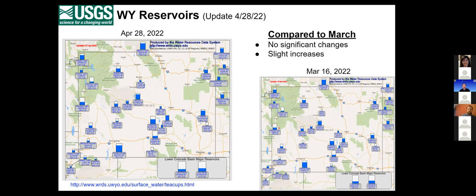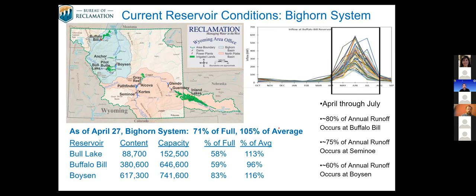Thank you, Aaron. Next up, we have Nicole Nielsen with the Bureau of Reclamation to talk about reservoir operations. Good afternoon. I'm going to share a little bit about our current reservoir conditions within the Bighorn Basin and the North Platte Basin, coming off a dry year and these drought-like conditions this year, which are affecting how we are storing and delivering our water. The Bighorn system sends water to irrigate approximately 200,000 acres of farmland, so we try to be very mindful of our water conditions and operations for our irrigation district partners.